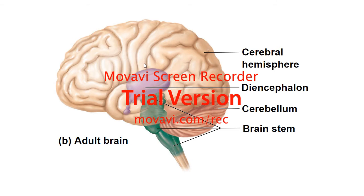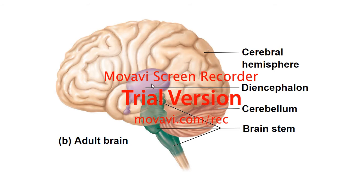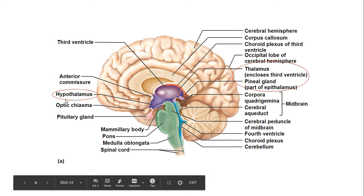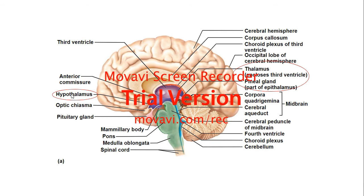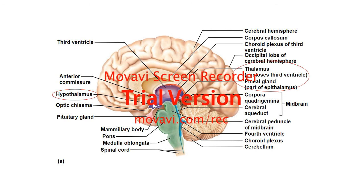Here you can see the cerebral hemisphere and the diencephalon sitting on top of the brainstem. Remember the brainstem consists of the midbrain, pons, and medulla. In this diagram you have your hypothalamus circled, which is important because it along with the pituitary gland interact with the endocrine system — important for body temperature, hormones that affect different things. All those deal with the endocrine system.